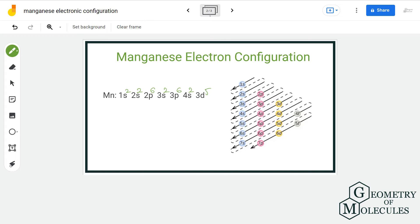If we calculate the number of electrons, the total will be 25. So the electronic configuration of manganese can also be written another way, which is Ar 4s2, 3d5.